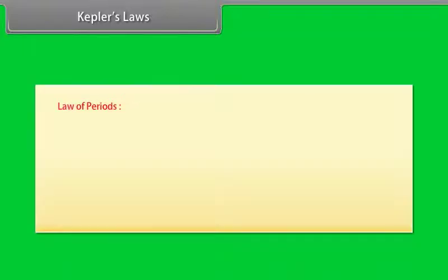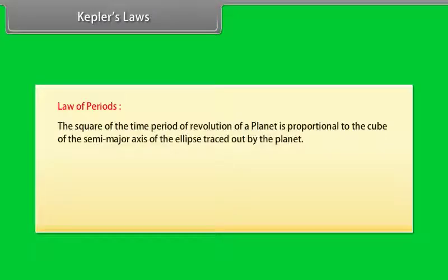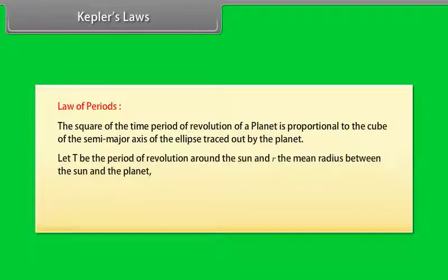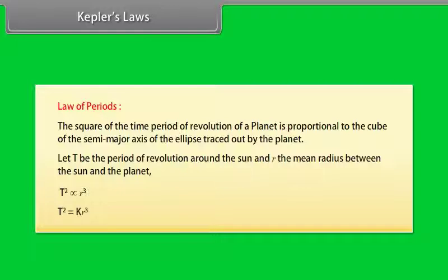Law of periods: the square of the time period of revolution of a planet is proportional to the cube of the semi-major axis of the ellipse traced out by the planet. Let T be the period of revolution around the sun and r the mean radius between the sun and the planet. T² is directly proportional to r³, i.e., T² = kr³.